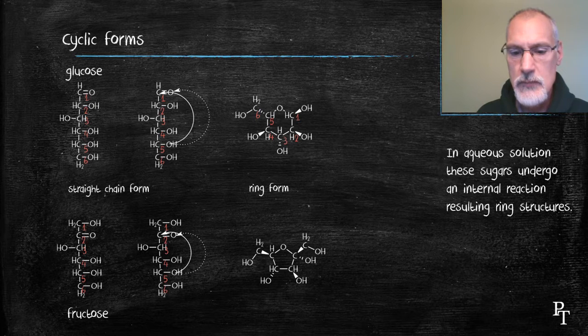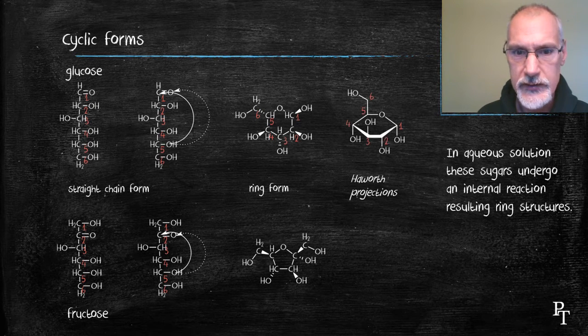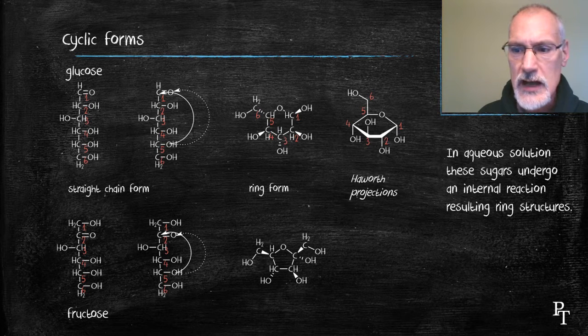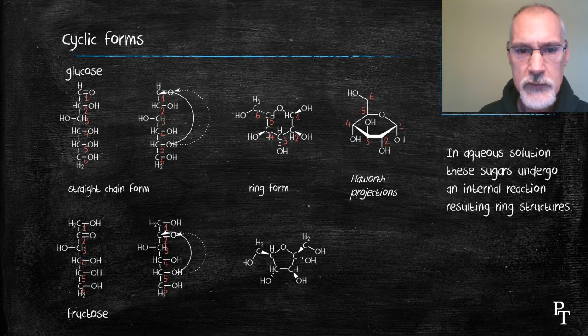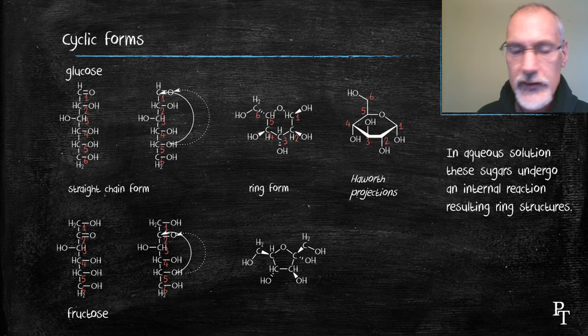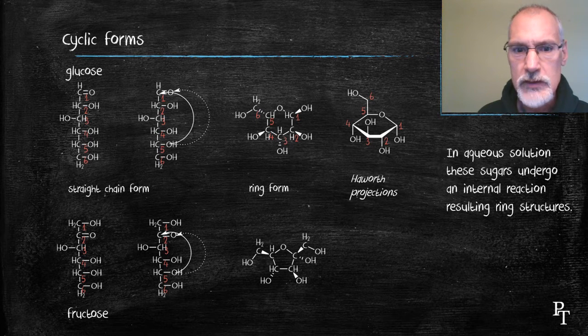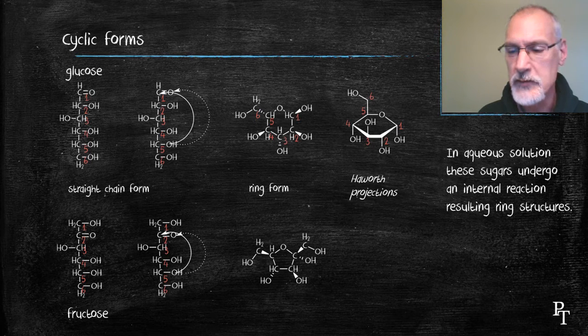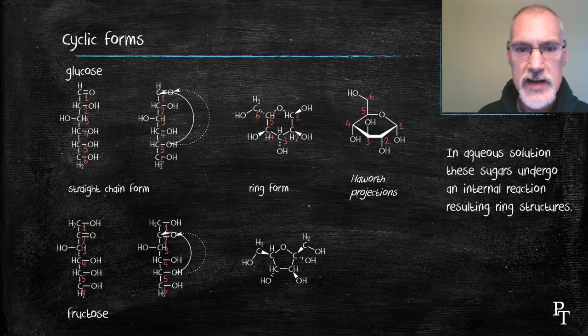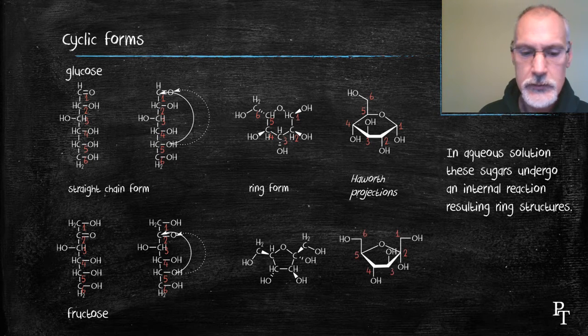This particular molecule can also be represented in what we call Haworth projections. Haworth projections essentially strip away the implicit or understood hydrogen and carbons to allow us just to focus on the functional groups that are reacting. So here we can see the molecule glucose. Many of you who've taken biology might remember the location of the hydroxide groups by the phrase down, down, up, down, which gives the location and orientation of the OH groups.